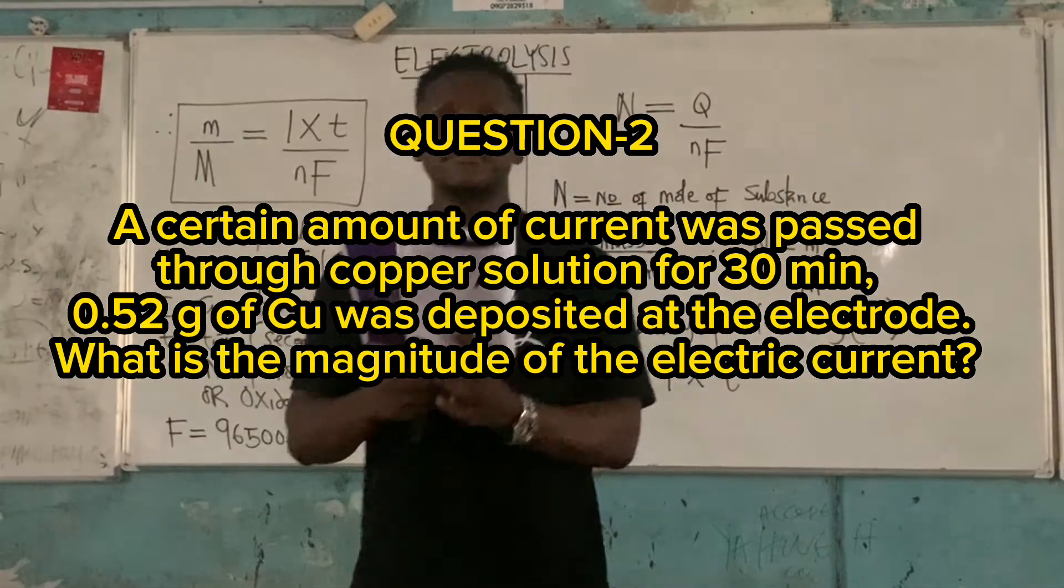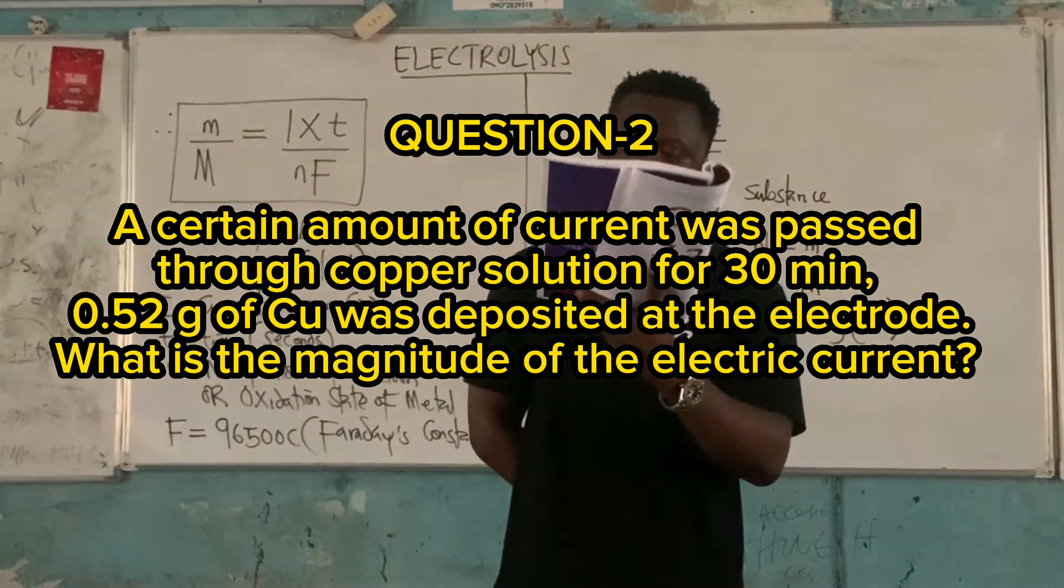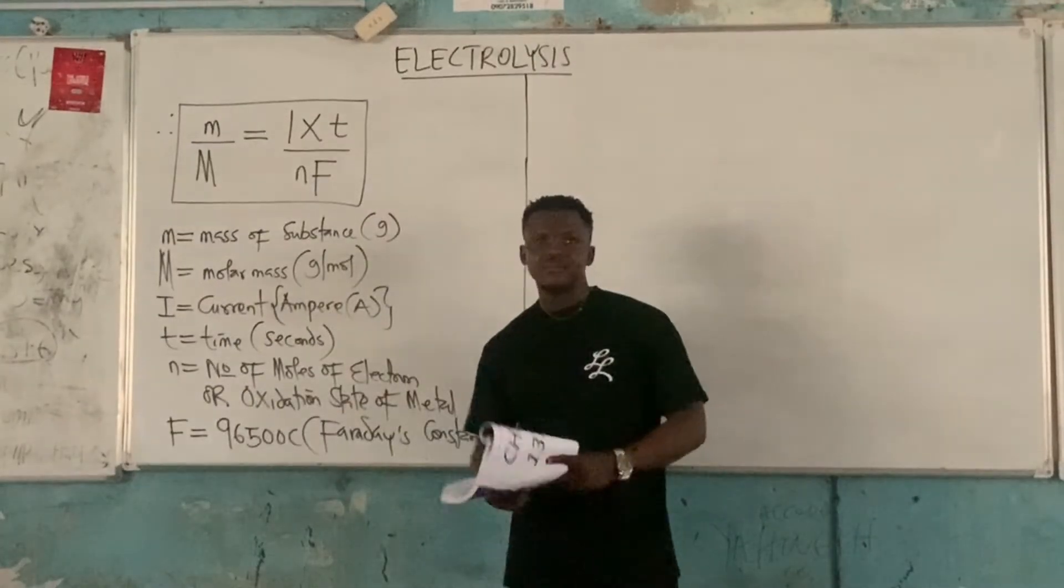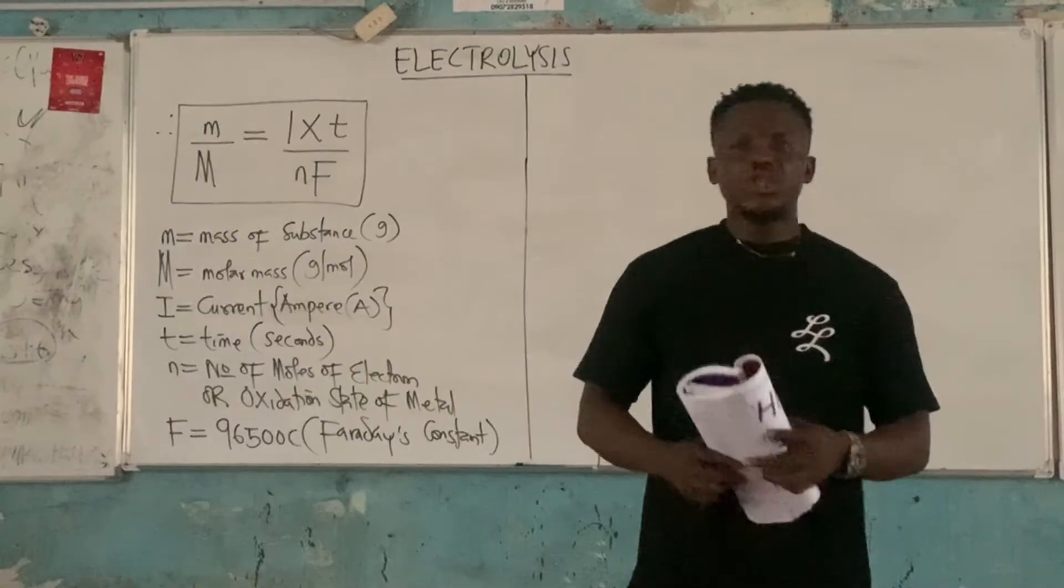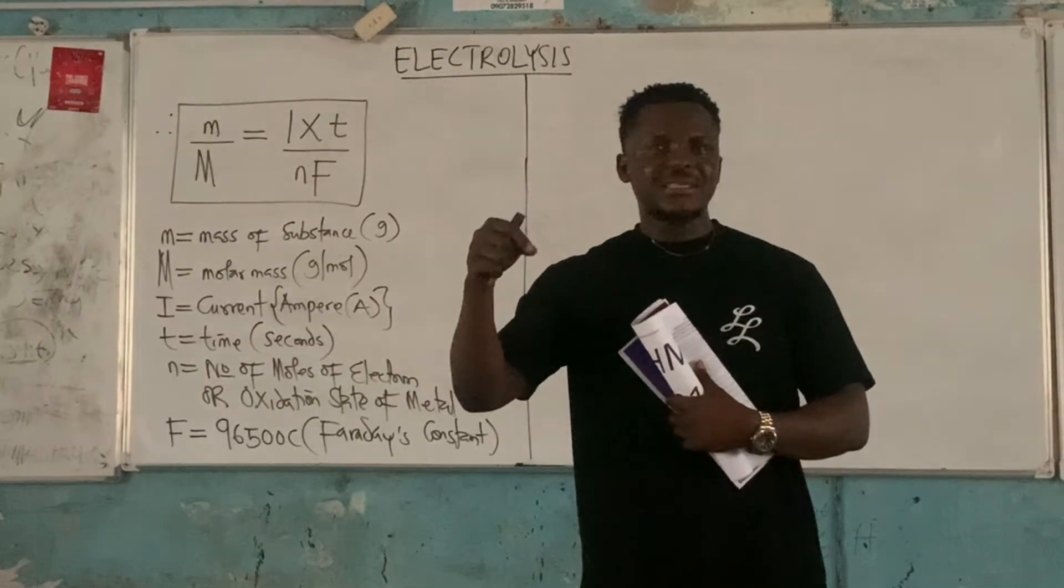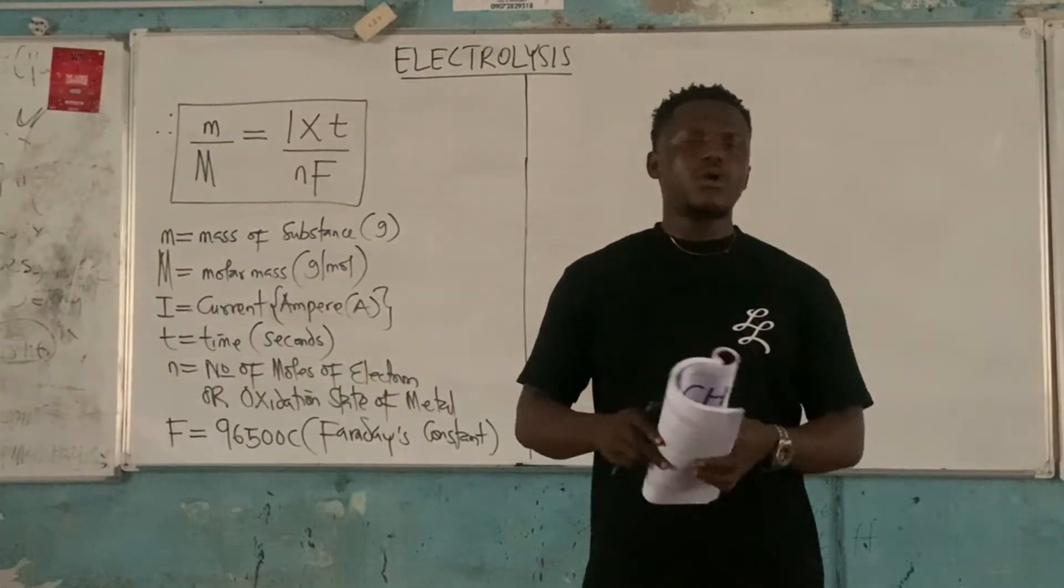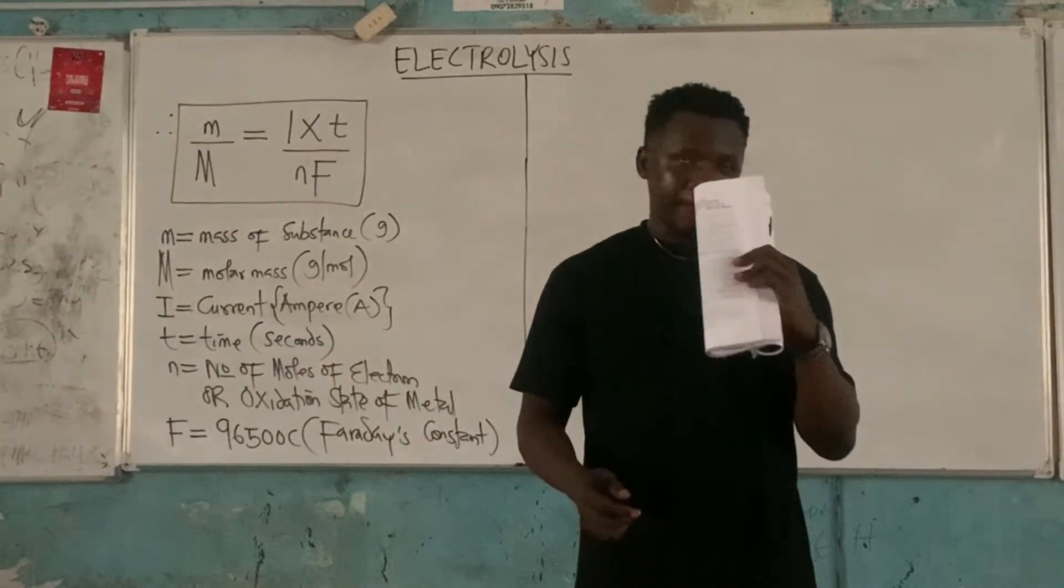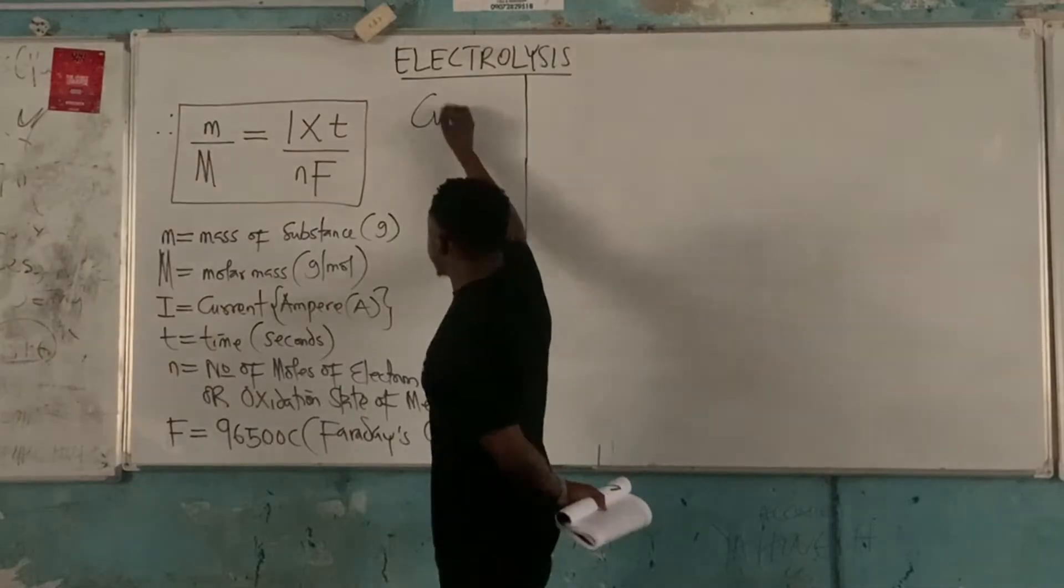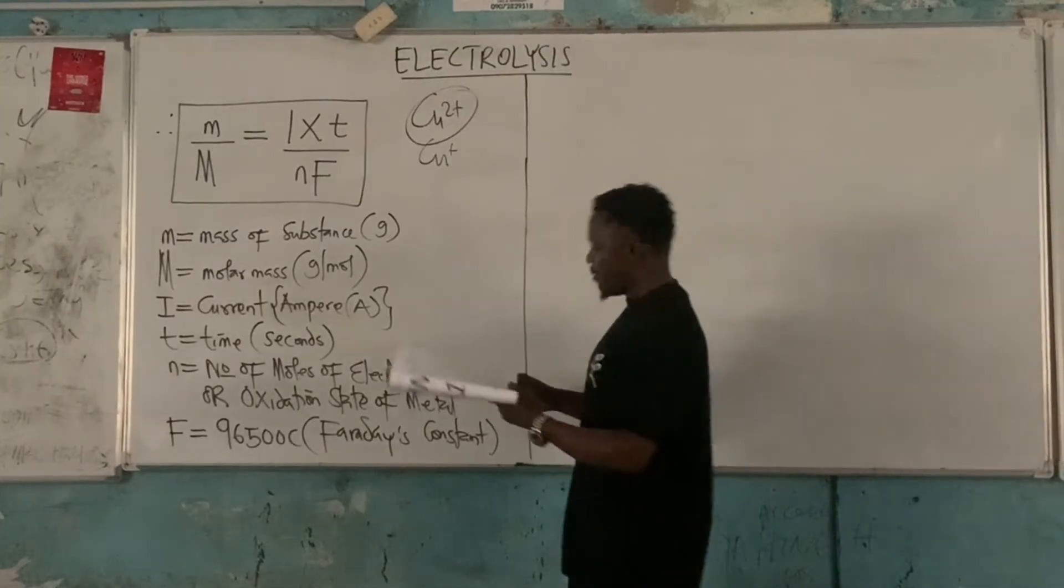You can see how we got the answer. A certain amount of current was passed through copper solution. Let me tell us another skill we can use to get this n. Most of the times when they give the electrolytes, you see something like copper two sulfate, iron three. Those oxidation states is actually that of the metal, so you can equally use it. They use copper solution. The most common copper solution is copper two sulfate. So the n here is going to be 2. Take note of that because copper has two oxidation states. This guy is the most predominant.